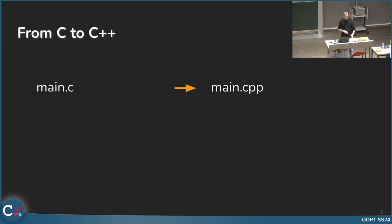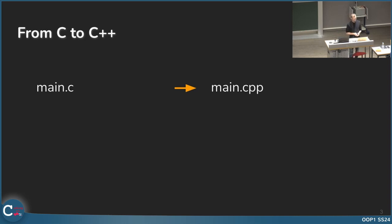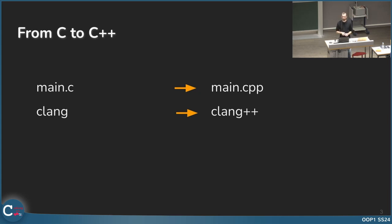The most obvious thing is the file name. We hopefully all know the main.c file, and in C++ it's just .cpp. The second thing is the compiler — I hope all of you know clang, and it is pretty much similar: it is then clang++. So when you want to compile your code, just use clang++ for C++.